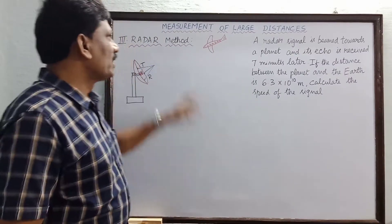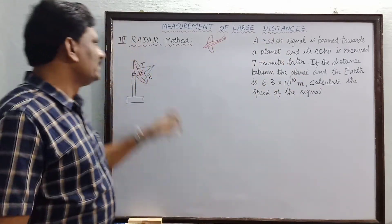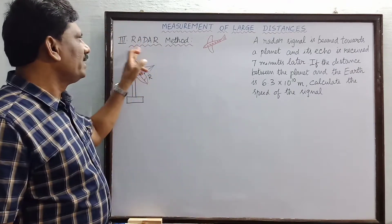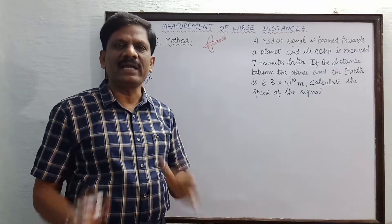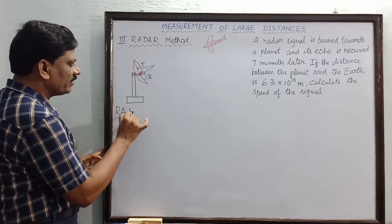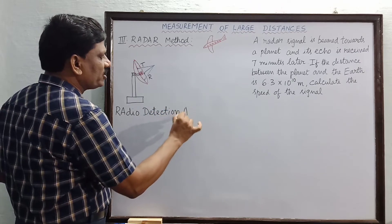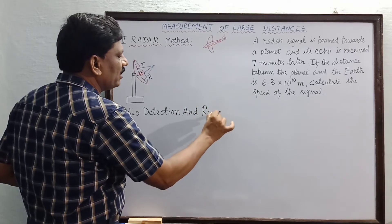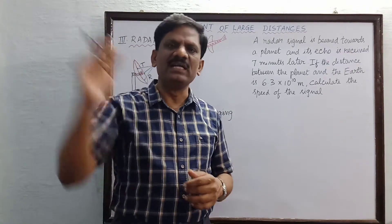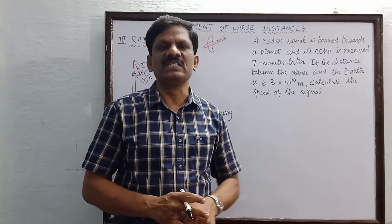We are going to explain the third type of measurement of large distances. The name of the method is the radar method or radar pulse method. RADAR is an acronym — its full form is Radio Detection And Ranging. Ranging means to find the distance of an object from the observing point. We are going to use radio waves, which are one type of electromagnetic wave.